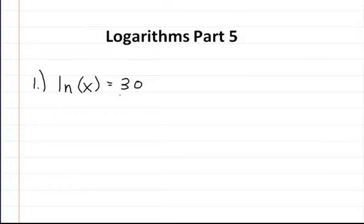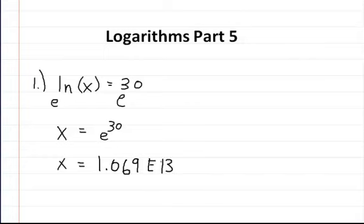So in this first one, we're going to be solving for x, and the way we do that is by raising both sides by e. And if you raise both sides by e, the e and the ln cancel out, so you're left with x is equal to e to the 30. And if you type that into your calculator, you're going to end up with 1.069 e to the 13. And that would be the solution for the first problem.